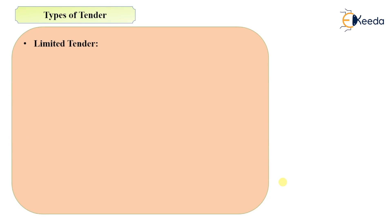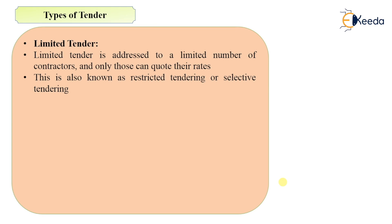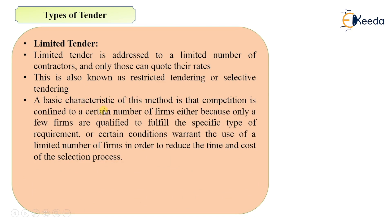The last type of tender is limited tender. Limited tender is addressed to a limited number of contractors and only those can quote their rates. This is also known as restricted tendering or selective tendering. The basic characteristic of this method is that competition is confined to a certain number of firms, either because only a few are qualified or because conditions warrant limiting firms to reduce the time and cost of the selection process.